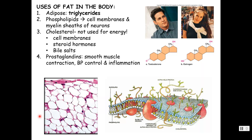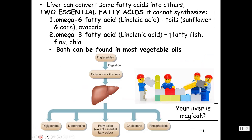There are two essential fatty acids the liver cannot make. Omega-6 fatty acids — linoleic acid — are high in sunflower, corn, and avocado oils. Omega-3 — linolenic acid — is high in fatty fish, flax, and chia seeds. Both can be found in most vegetable oils. Triglycerides are digested to fatty acids and glycerol; we store fats as triglycerides, can make lipoproteins, use fatty acids in cell structures, and make cholesterol and phospholipids. The liver manages all your fats based on your body's needs.